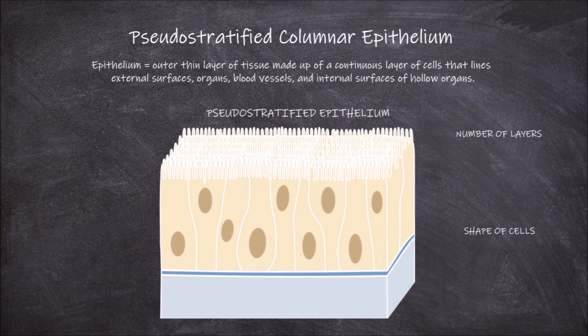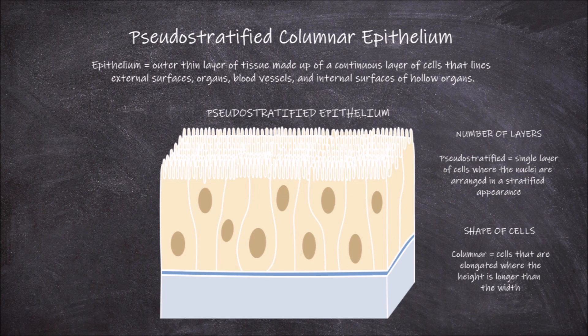When the epithelium consists of only a single layer of epithelial cells but the nuclei within the cell are arranged in the manner that would be seen in stratified epithelium — so not all in the same location — it is called pseudostratified. When the epithelial cells are elongated and the height of the cell is longer than the width, they are called columnar cells.